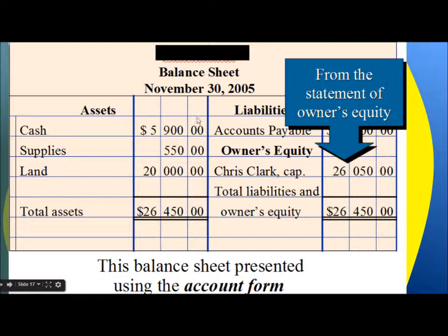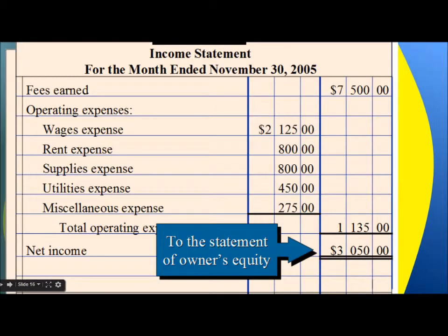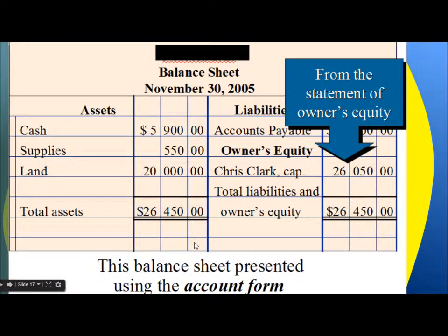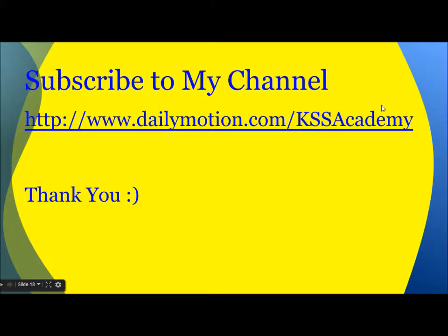This is an example of a balance sheet showing cash, supplies, land, accounts payable, and owner's equity from our example. The balance sheet confirms that assets equal liabilities plus owner's equity. We will learn more about this in upcoming videos, so please subscribe to the channel. Thanks very much for watching.